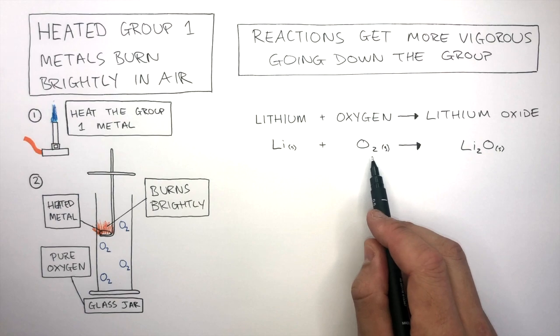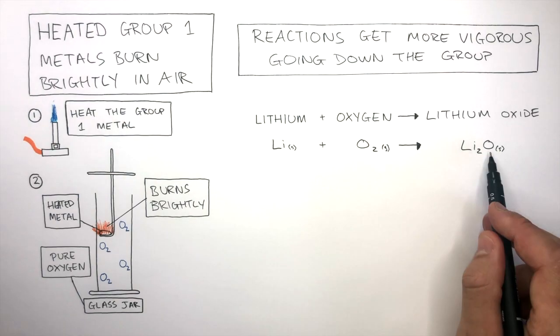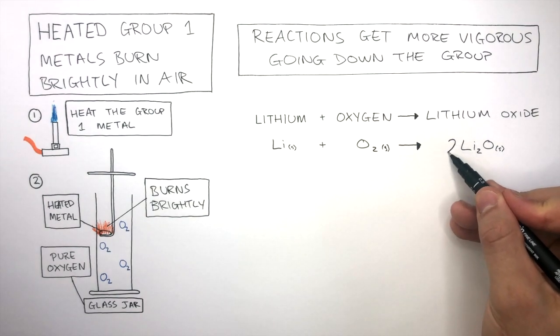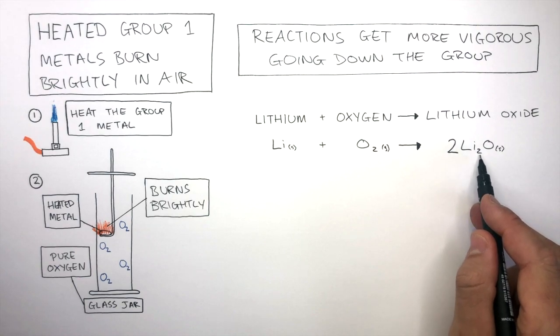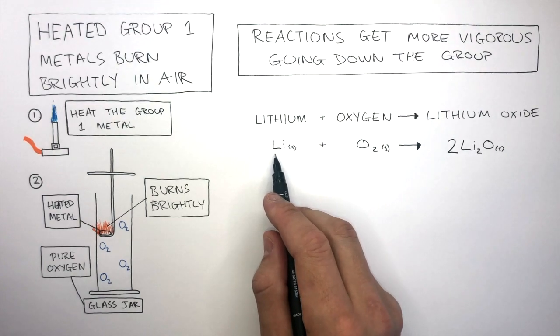To balance this, there are two oxygens on the left and one oxygen on the right. Therefore we put a big 2 in front of the Li2O. This means there are now two oxygens on the right as well.